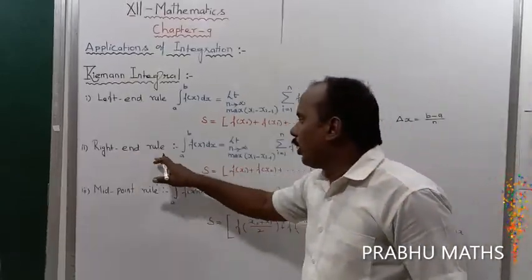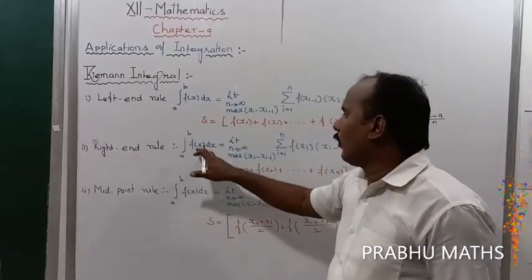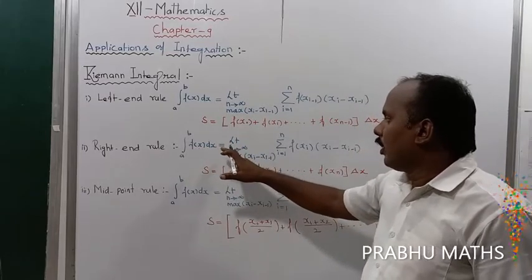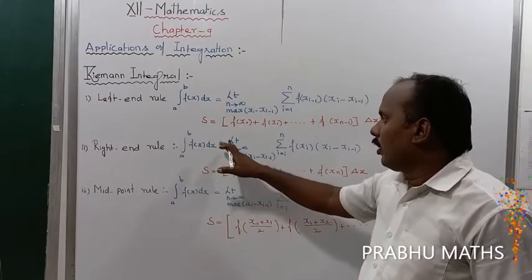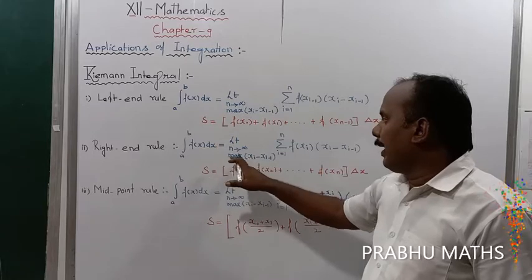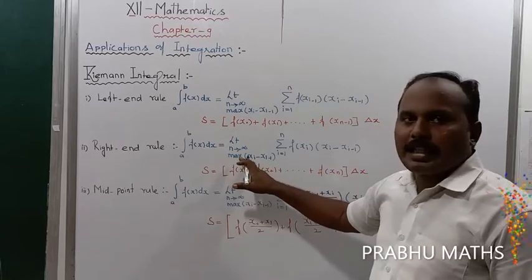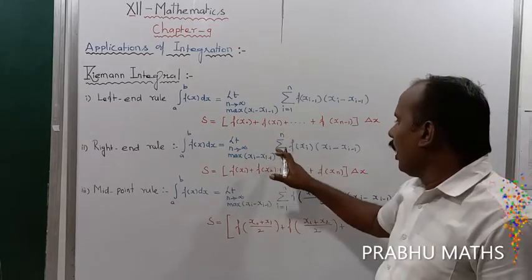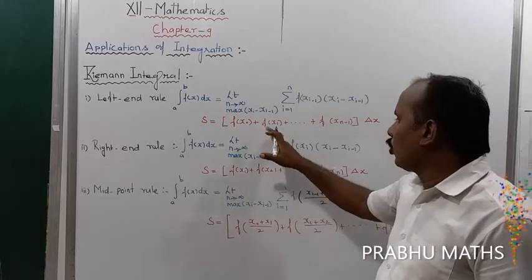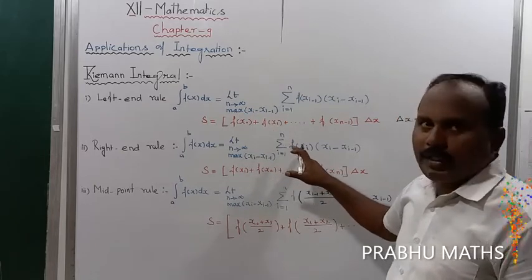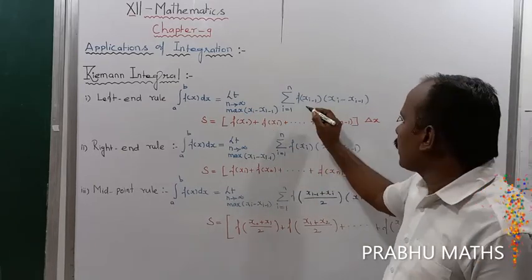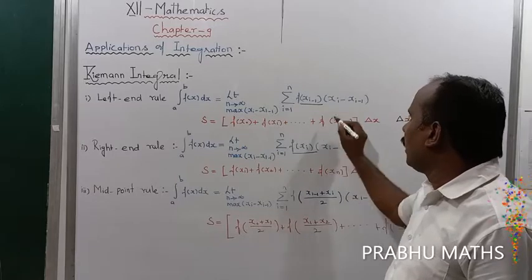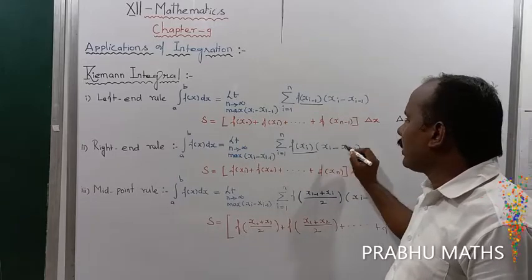For the Right End Rule, the integral from a to b of f(x) dx is equal to the limit as n tends to infinity of the summation where i varies from 1 to n of f(x_i) times delta x. The difference from the Left End Rule is that this uses x_i instead of x_(i-1).